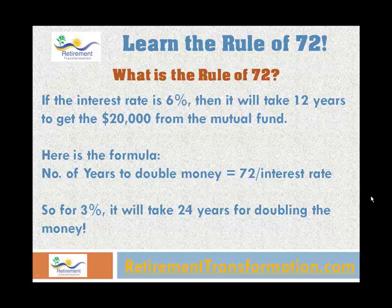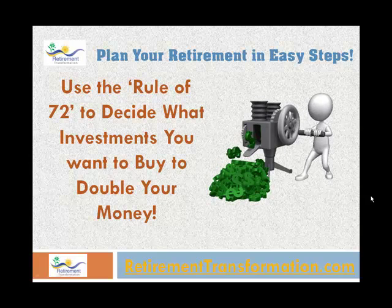Here's another example. If you're getting a 3% interest rate on whatever financial instrument you have, 72 divided by 3 equals 24 years. So it will take 24 years to double your money. You can see that 3% versus 24 years gives you a much better picture — it basically draws a picture in your mind.